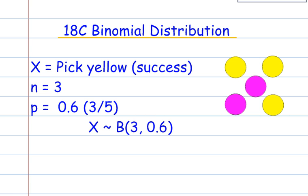There are going to be three counters, so N is three. And because there's three counters out of five which are yellow, then that gives the probability of 0.6. So we can write it in this way.